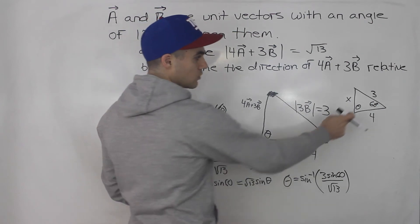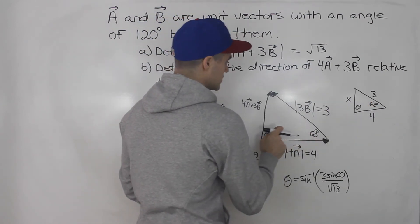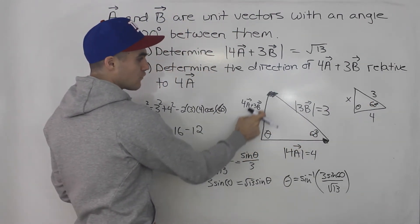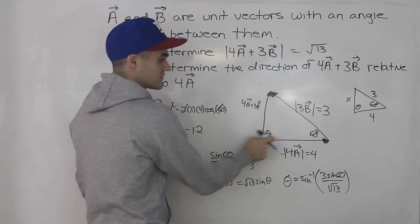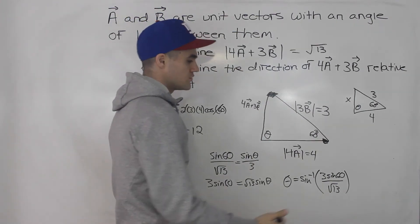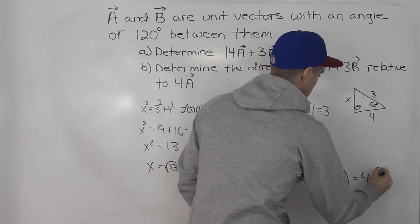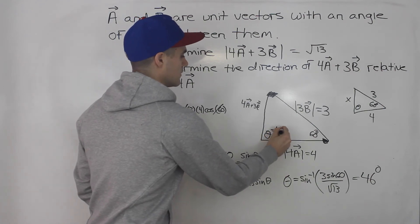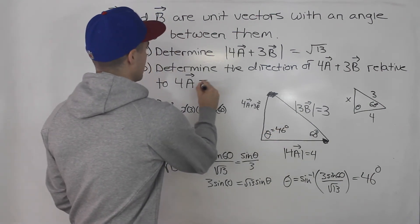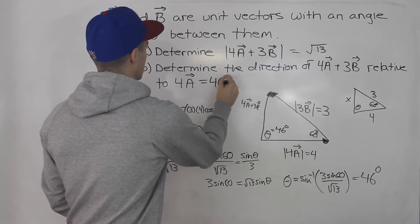And that calculation there will give us this angle, the direction of 4a plus 3b relative to this vector 4a. And when you do that calculation, you end up getting 46 degrees. So this angle here, 46 degrees, and that's the answer to part b.